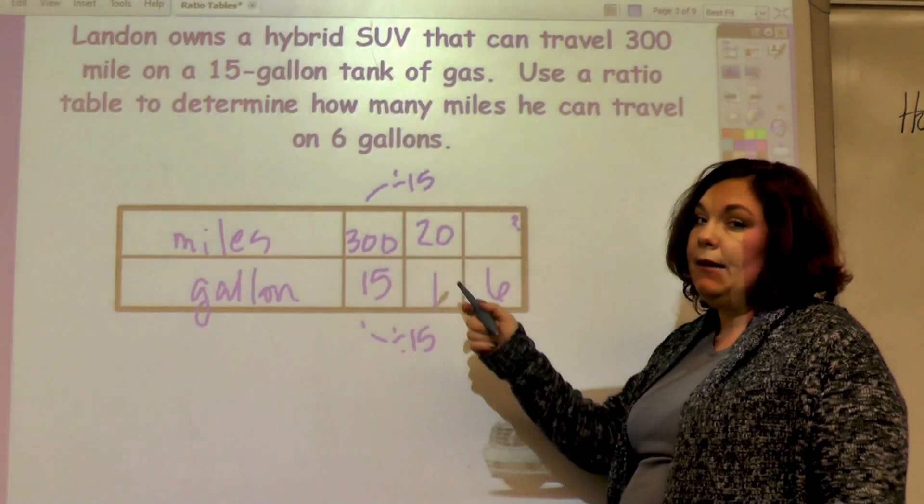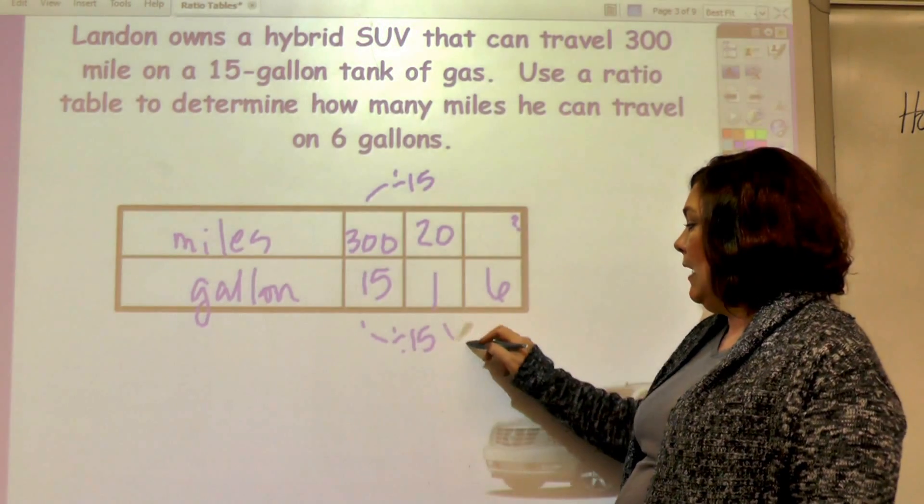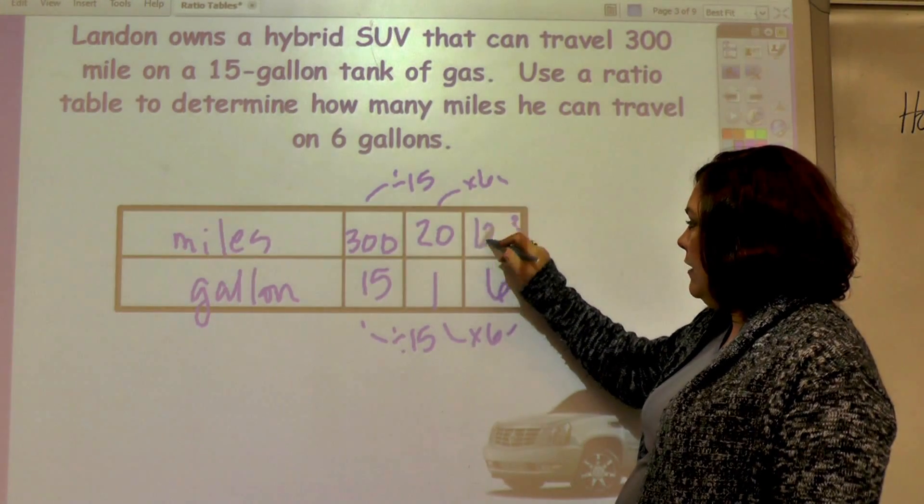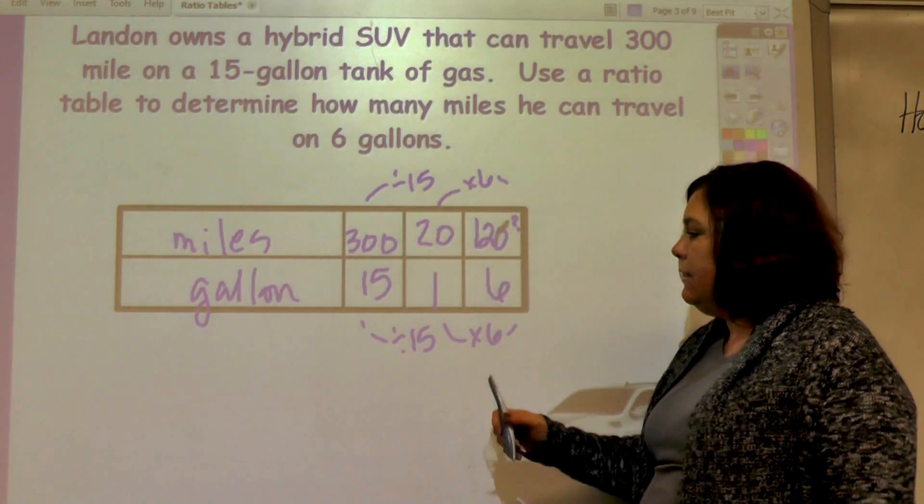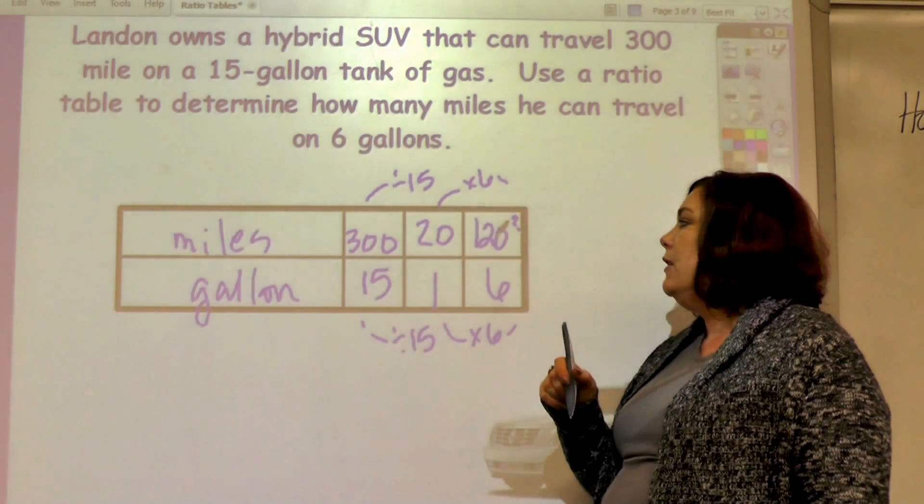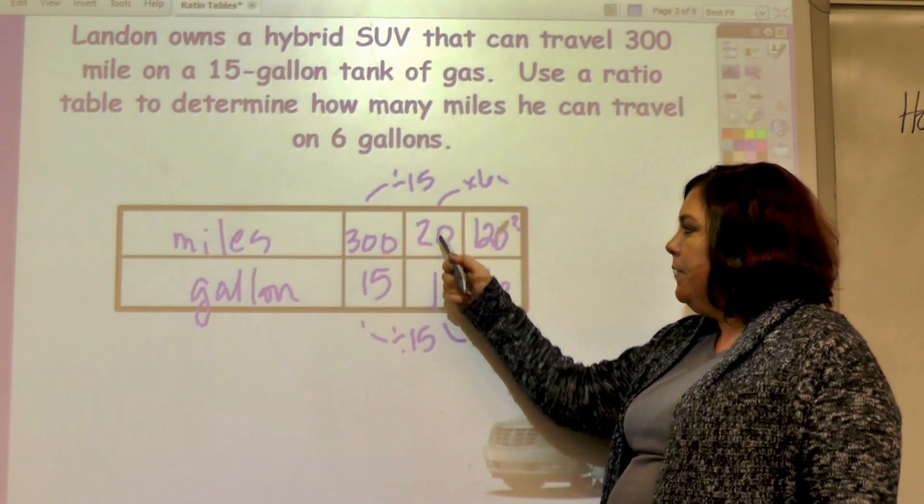When I divide by 15, I get 20 and 1. Now how do I get from 1 to 6? I multiply times 6, which is 120. And again this makes sense. This is less than half, this is less than half. So I simplify before I multiply.